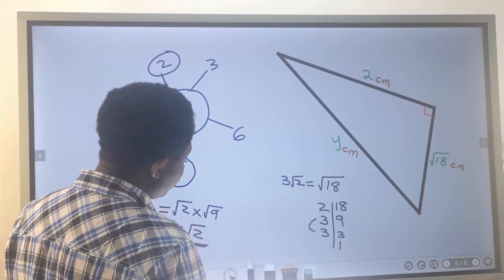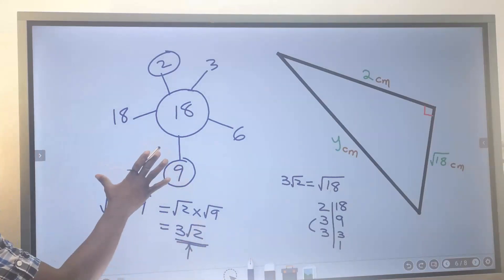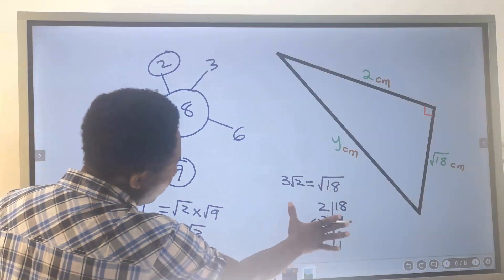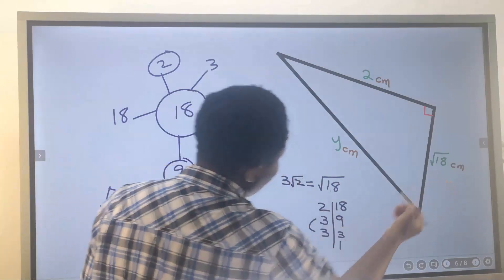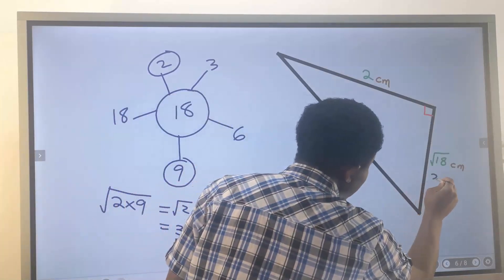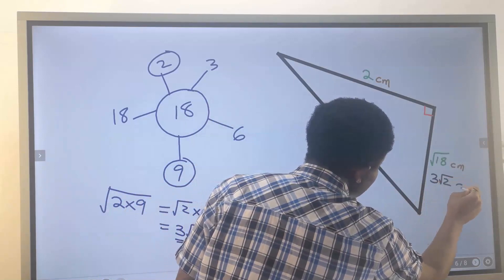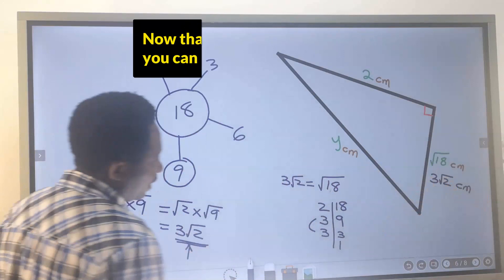This is in surd form, which we obtained here. You can use this method or that method to find the square root of 18. Next, here I will write 3√2 centimeters instead of the square root of 18.